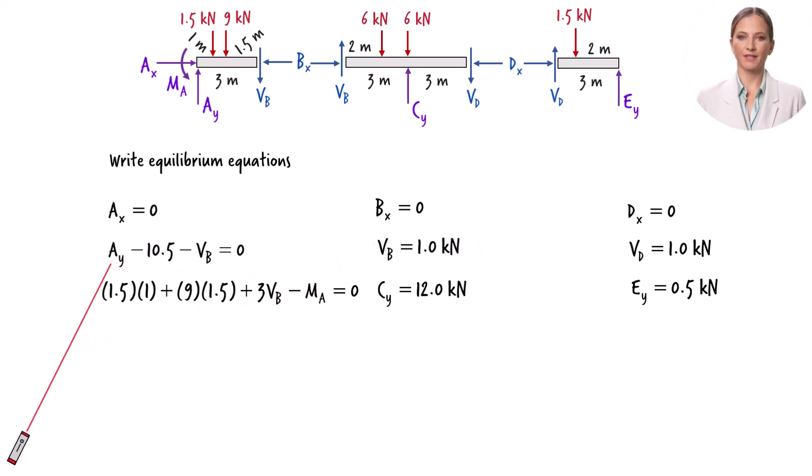Substituting 1 for Vb in this equation, we get, therefore, Ay equals 11.5 kN.